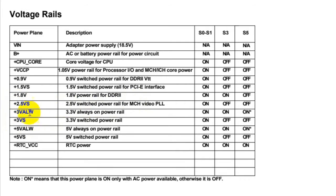We have two main voltages: plus 3V always and plus 5V always. As I showed in the previous video, based on these two voltages other voltages are generated. Plus 3V always is an always-on power rail — present in all states. The same is true for plus 5V always. These are the two main voltages, and we'll explain the 3V and 5V circuit after this table.